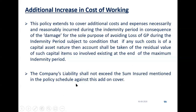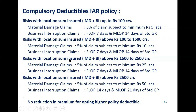These are the IR policy deductibles agreed by GIC. Up to 100 crores sum insured, the deductibles are 5 lakhs, 7 days, or 14 days. Then 5% with 10 lakhs, then 5% with 25 lakhs. Up to 2500 crores, 5% with 50 lakhs; FLOP is 14 days and MLOP is 21 days. For steel plants and power plants above 500 crores sum insured, the FLOP deductible is increased to 30 days, MLOP to 45 days, and the amount deductible to 1.25 crores.